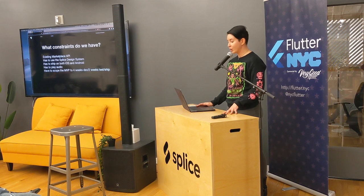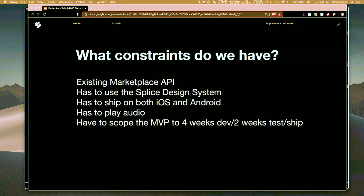We're new to this framework called Flutter. We have this app that we know is going to be an extension of the marketplace we have on the web. These were some of the constraints we had: we knew we had an existing marketplace API — we were not building an API from scratch. We had to use a Splice design system, which we have components for in our Angular applications on the web but don't exist yet in Flutter. So we knew there was going to be a lot of custom theming, and we weren't necessarily going to be using a lot of off-the-shelf native components.